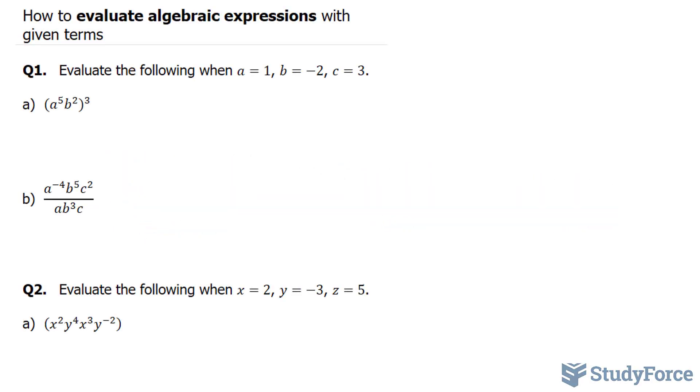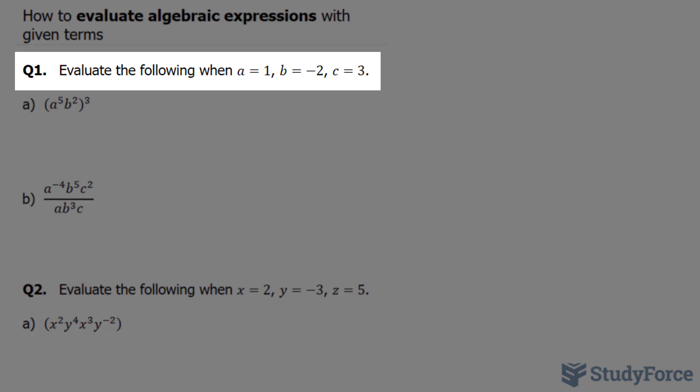In this video, I'll show you four examples on how to evaluate expressions with given terms. Question number one reads, evaluate the following when a is equal to 1, b is equal to negative 2, and c is equal to 3.